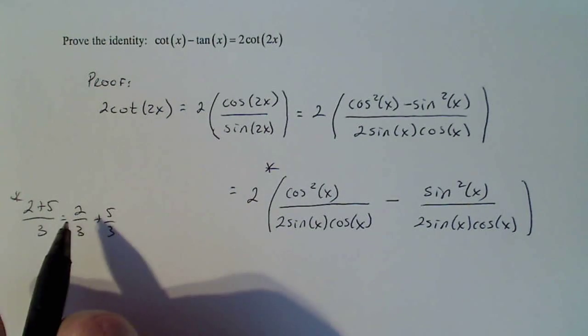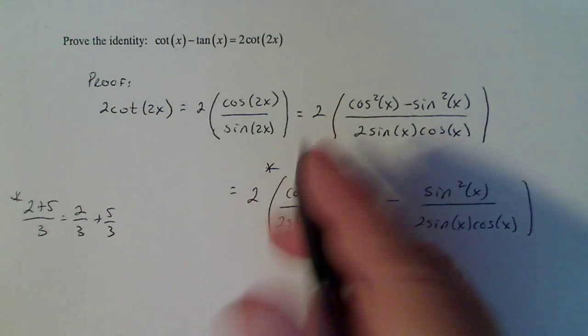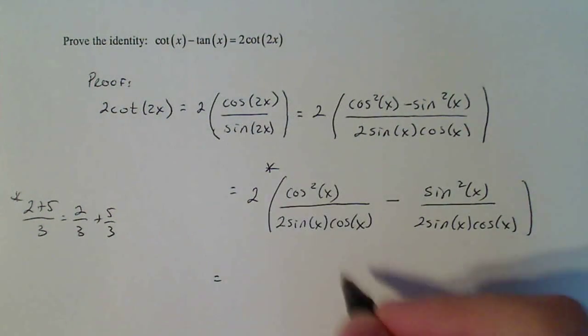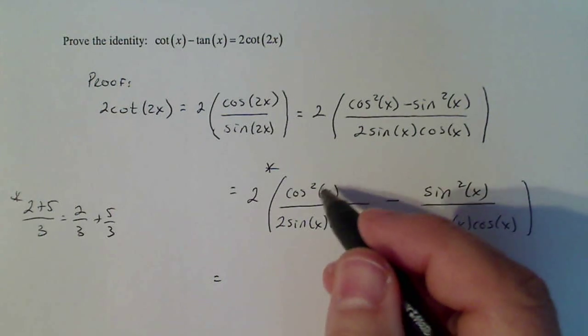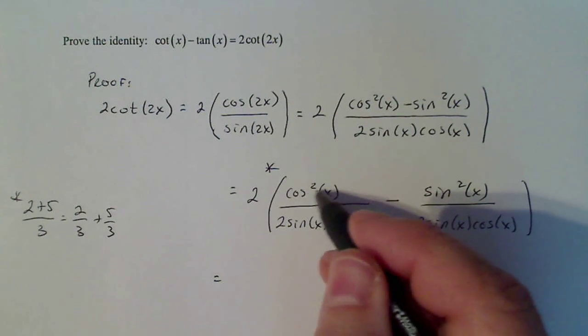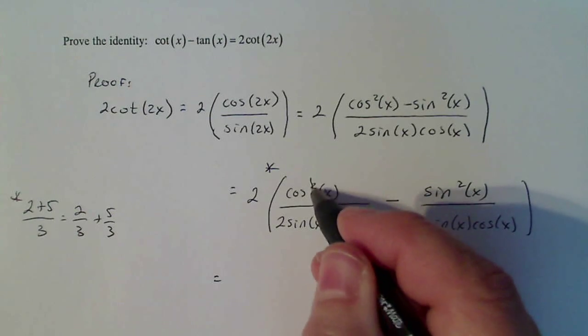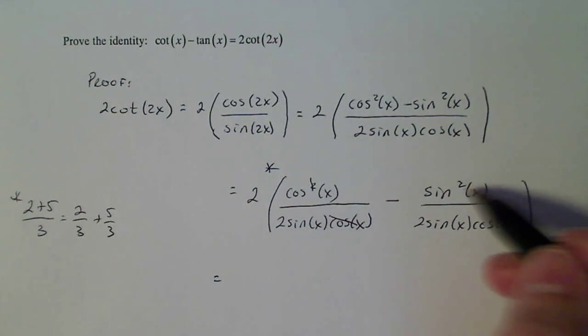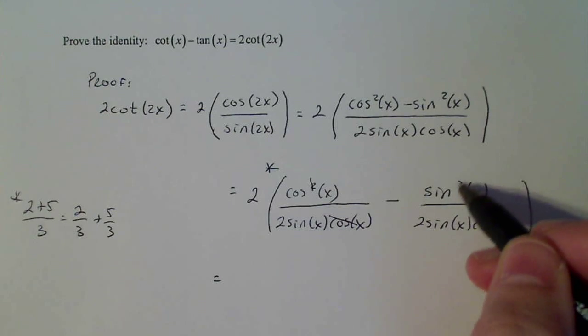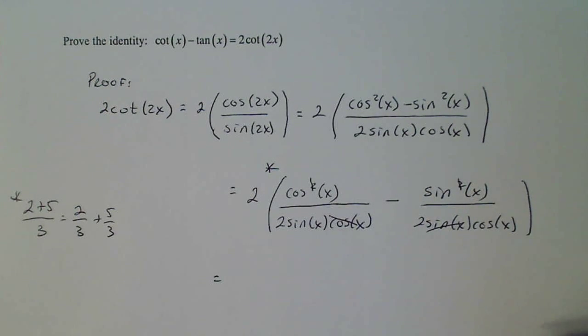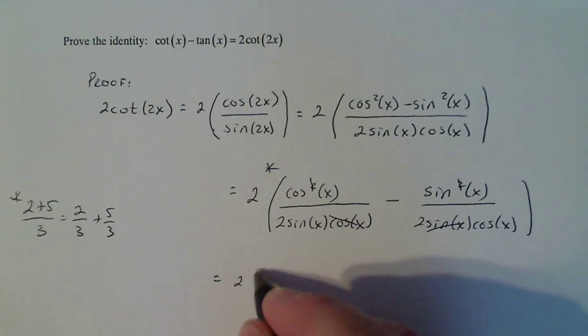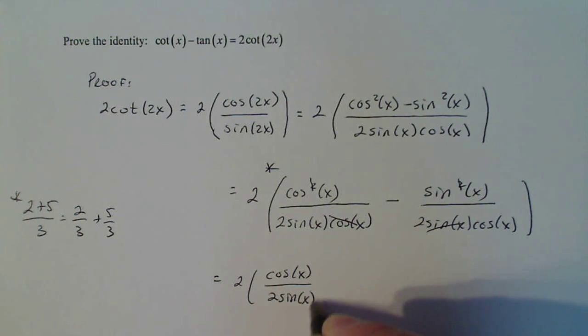Now comes the fun part, especially for most students. Students love canceling. I have two cosine x's here and one cosine x here, so one of those can go away with one of those. I have two sine x here and one sine x here. One of those can go with one of those. So I'm left with 2 times cosine x over 2 sine x minus sine x over 2 cosine x.